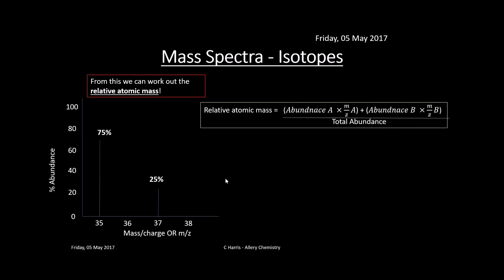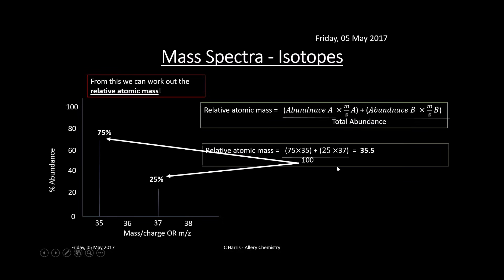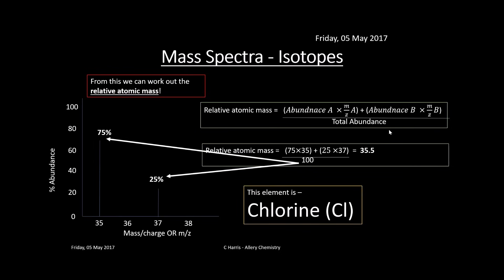From this information we can work out the relative atomic mass. The formula is: (abundance of isotope A × m/z of A) + (abundance of isotope B × m/z of B), divided by the total abundance. For more than two isotopes, just keep adding terms. Here: (75 × 35) + (25 × 37) divided by 100 equals 35.5. Looking this up in the periodic table identifies the element as chlorine — so you've effectively identified your element from the mass spectrometer.